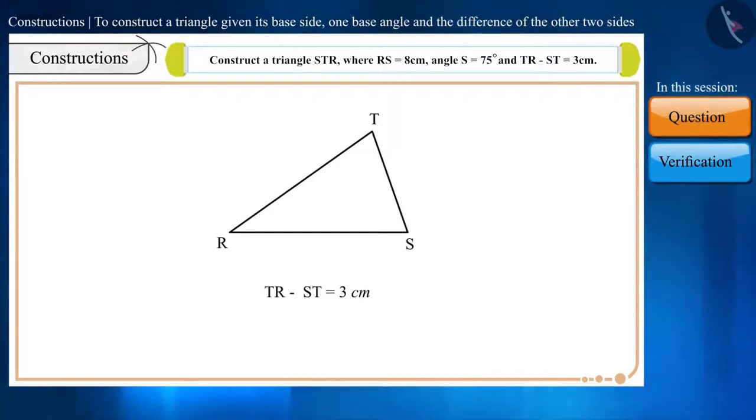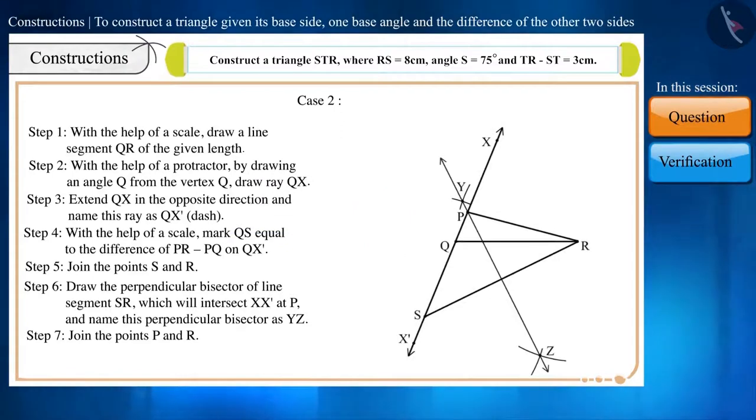It is given in the question that the measure of TR minus ST is 3 cm, from which we get to know that side TR is the larger side. We are given the measurement of angle S, but in TR, S is not there. Therefore, TR is not a side formed on the base angle. The side formed on the base angle is ST, which is the smaller side. So, we will do its construction as per case 2.